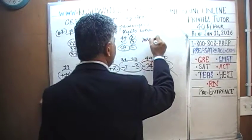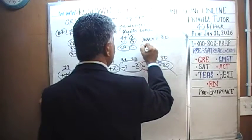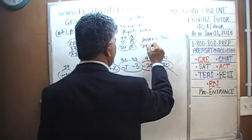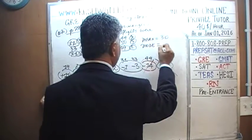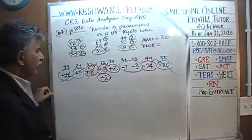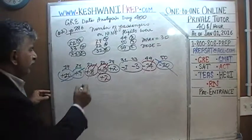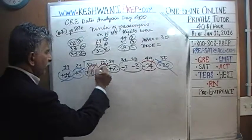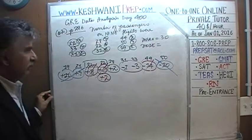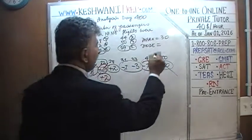So the mean is 30. The mode, of course, is very simple — the most frequently appearing number is 22; we have two 22s. That's the mode.